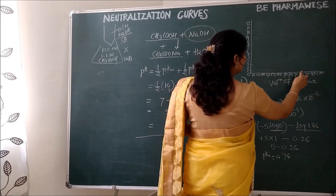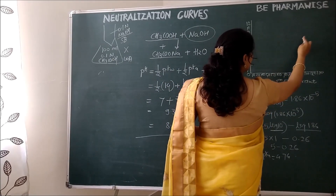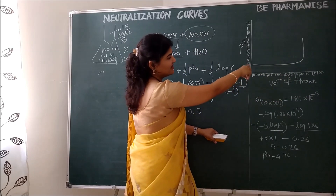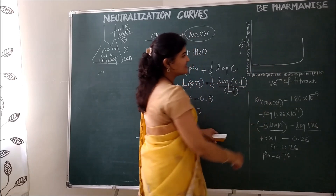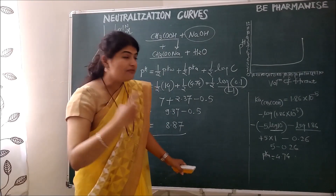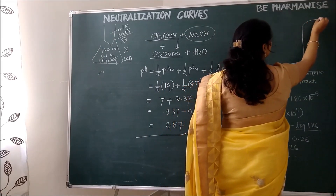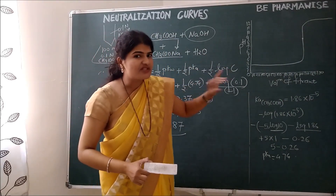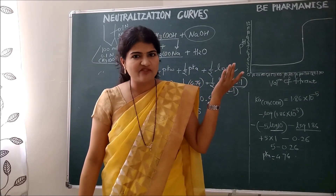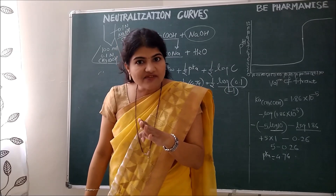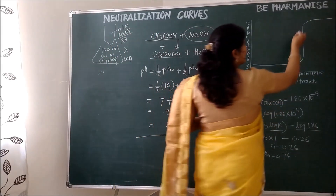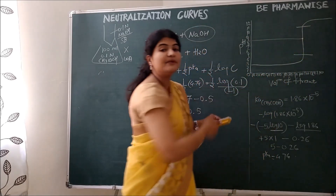The graph starts somewhere between 2 to 3, at 2.87, and at 100 ml addition the pH is 8.87. Below that it rises very slowly, then at the equivalence point it shows an abrupt change. After the equivalence point, when excess NaOH is added, the pH value goes up abruptly and afterwards goes gradually horizontal. If you find the middle point of the straight portion, it gives you the pH at the equivalence point.